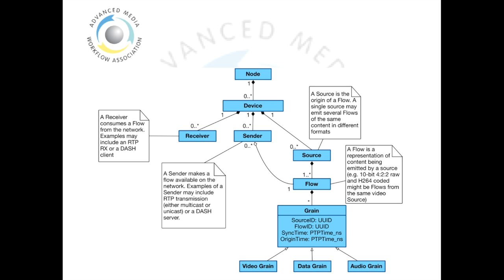Each of the aspects of the data model are related to each other as shown in this diagram. At the top level is the node, which represents any network-connected device such as a piece of hardware or a virtual machine. Sitting within these nodes are a number of devices, each of which contains a cluster of functionality. Devices may have senders and receivers, which are logical representations of transports onto a network, and each device may expose a number of sources. A source represents the origination point for video, audio or data.